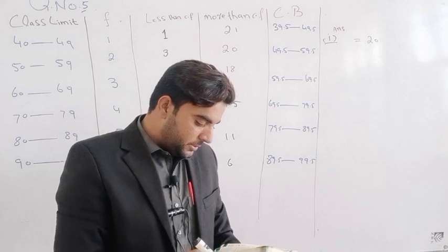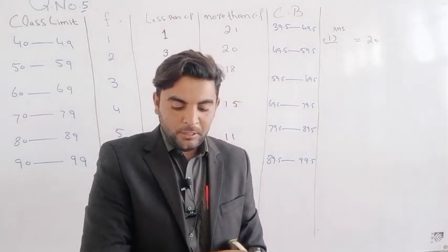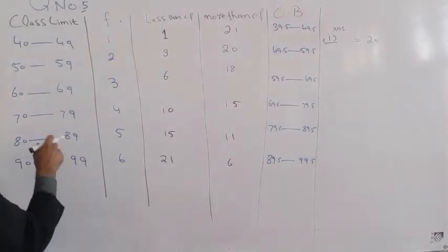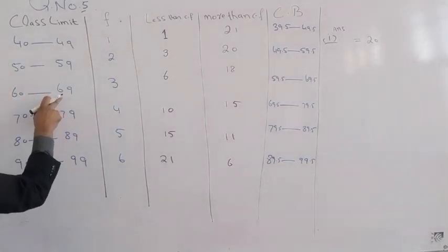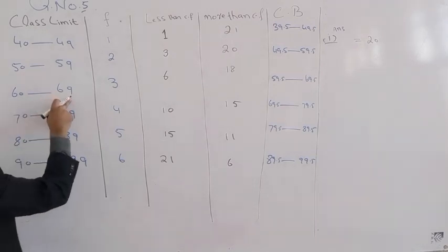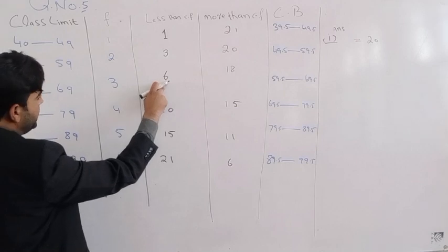Next question asks: number of students who obtained less than 70 marks. Students who got less than 70 marks - that means 69 or below, not 70 or above.